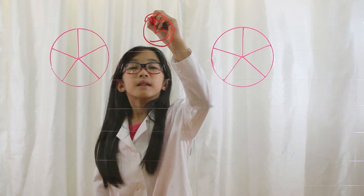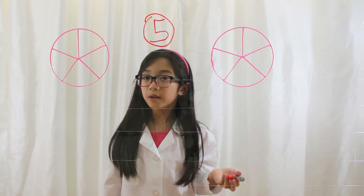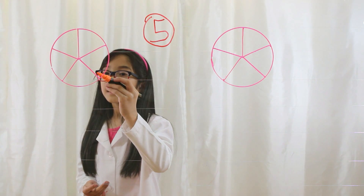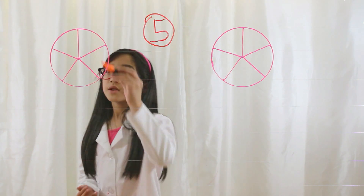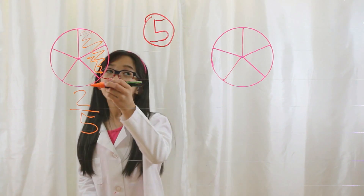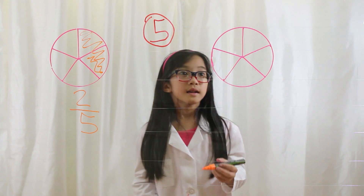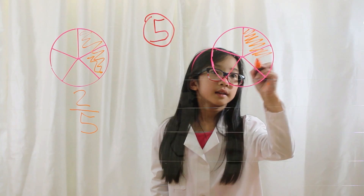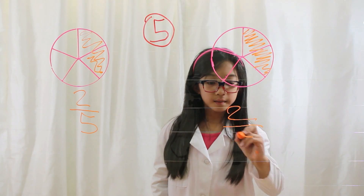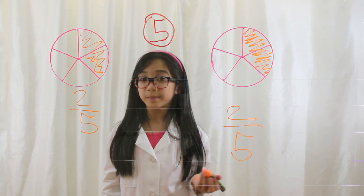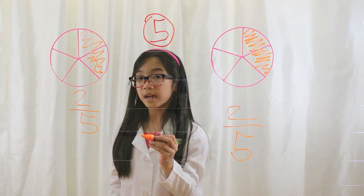This is the final type — type five. Type five is when both fractions are equal; the numerators and the denominators are the same. Let's say Hannah went to a party. She had a pie, divided into five pieces, but she only ate two — that'd be two-fifths. Let's say Savannah was also at the party. She divided into five pieces and also only ate two — that'd be two-fifths. What do you notice? The numerators are the same. The denominators are the same. If the numerators and the denominators are the same, they are equal.